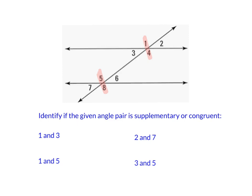For pair 1 and 3: angle 1 is highlighted but angle 3 is not — different coding — so they are supplementary. For pair 1 and 5: both are highlighted — same coding — so they are congruent. For pair 2 and 7: angle 2 is not highlighted and neither is angle 7 — both share the same coding — so those are congruent. For pair 3 and 5: angle 3 is not highlighted but angle 5 is — different coding — so they are supplementary.